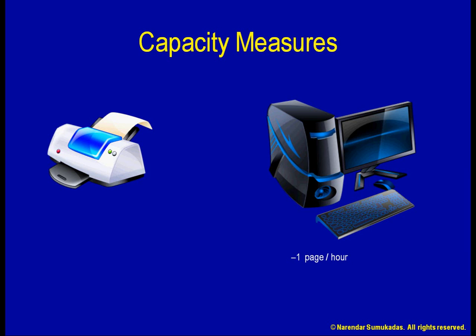I see you typing up some of your class notes into your computer. You are a fast typist — it looks like you are able to type at a speed of 62.5 words per minute. Figuring that an average double-spaced page has about 250 words, your computer is producing one page every four minutes, so your computer's capacity is a quarter of a page per minute. It looks like you have a super-fast computer compared to mine. What computer do you have? I think I should get the same kind.